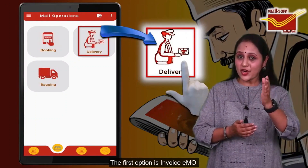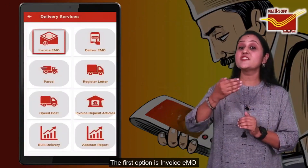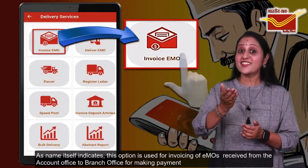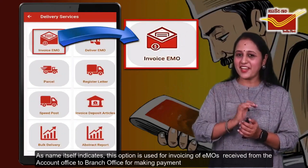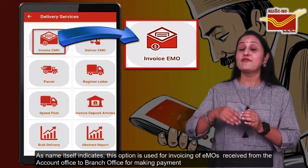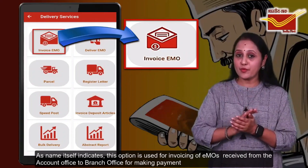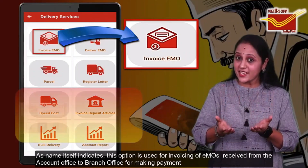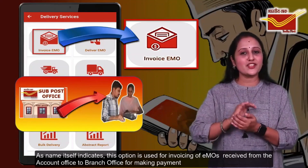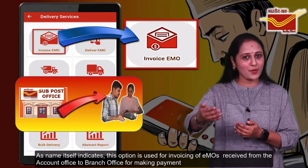The first option is Invoice EMO. As the name itself indicates, this option is used for invoicing of the EMOs received from the account office to the branch office for making payment.